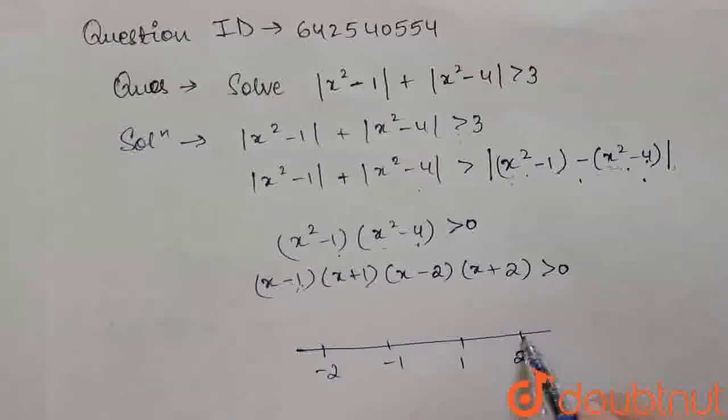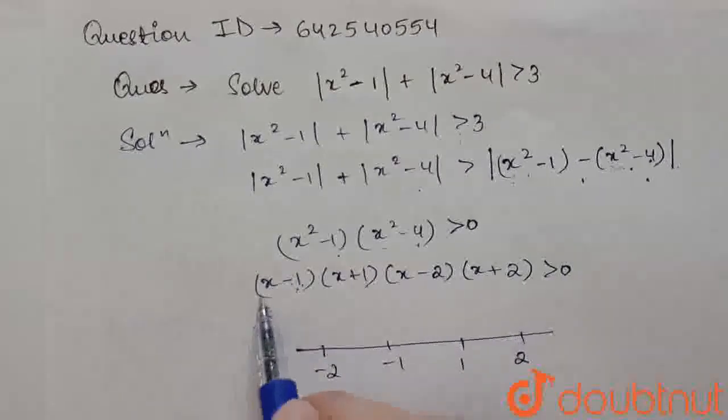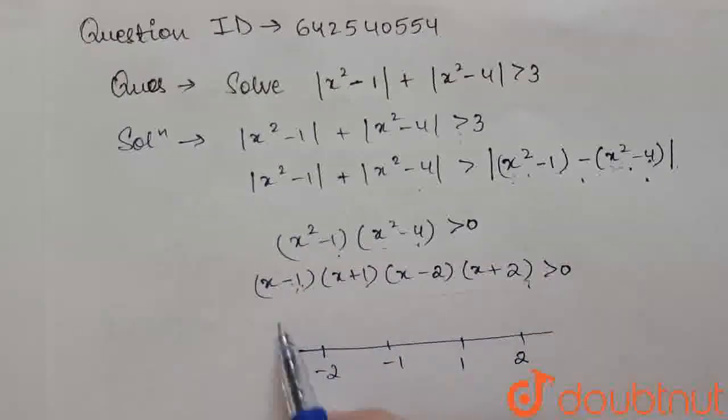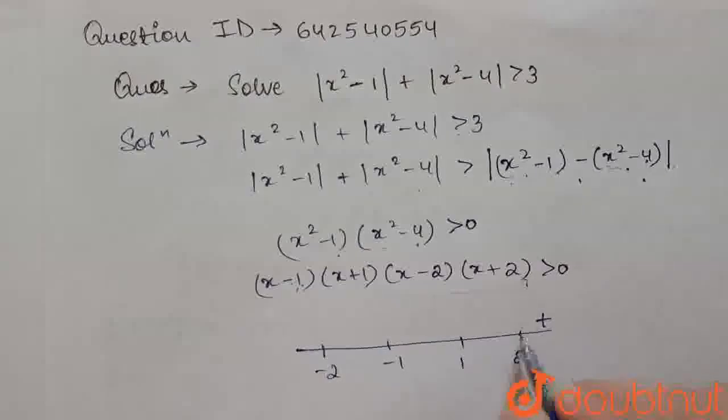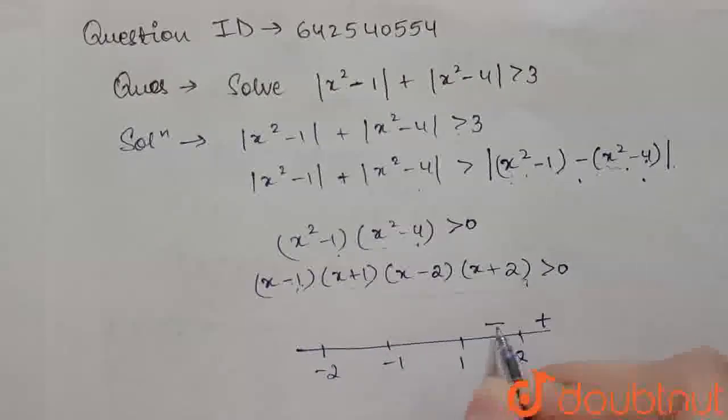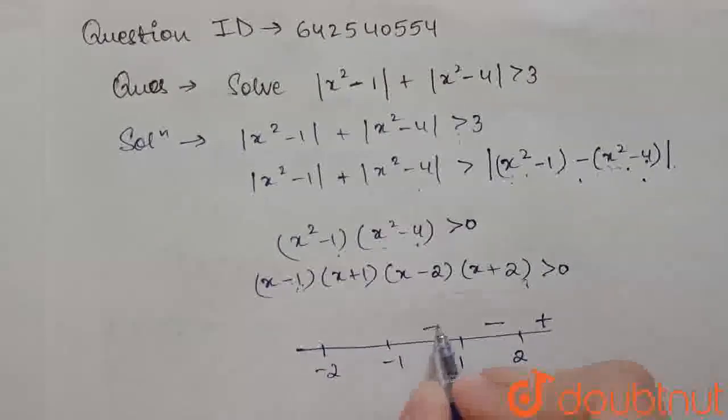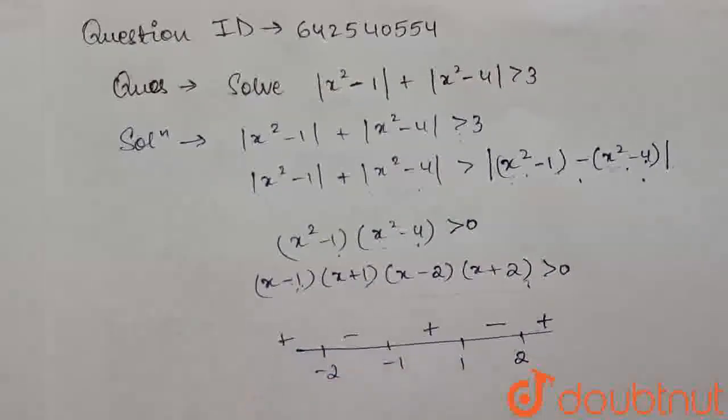Now for the values greater than 2, the value of this will be positive. So here we are having positive. After 2 the sign will change to negative. After 1 it will again change to positive, then negative and then positive.